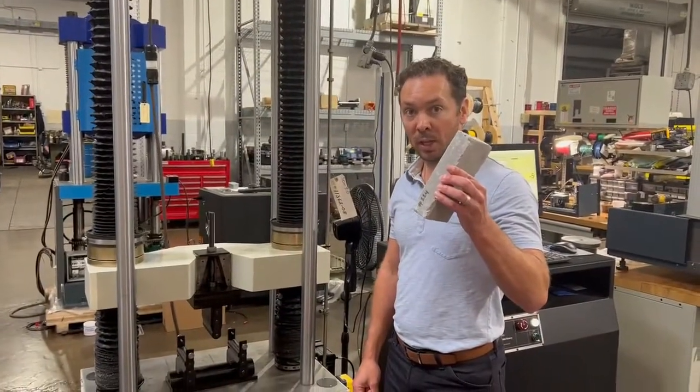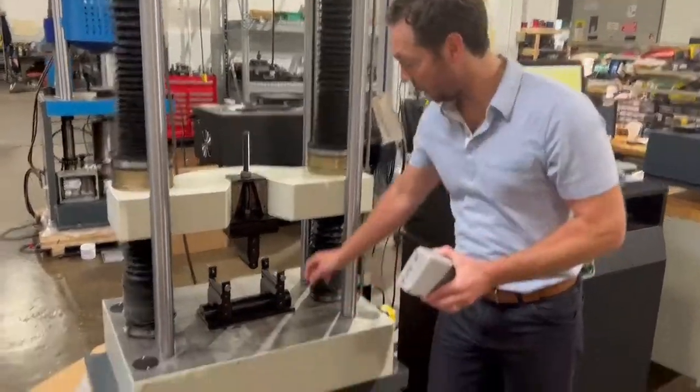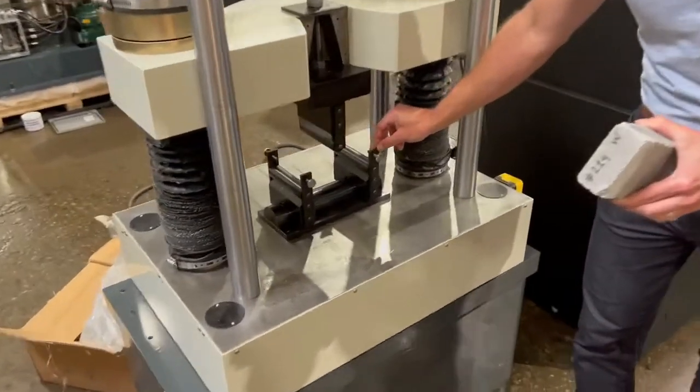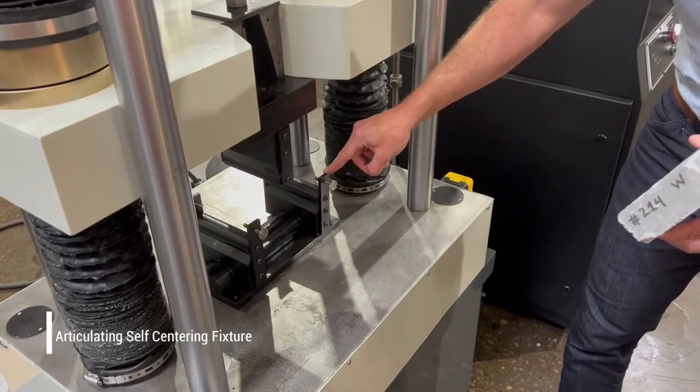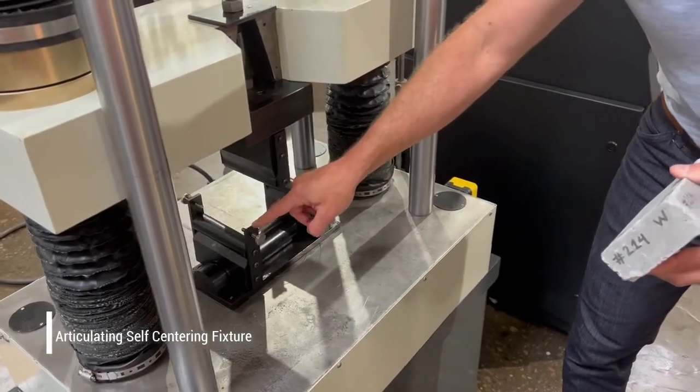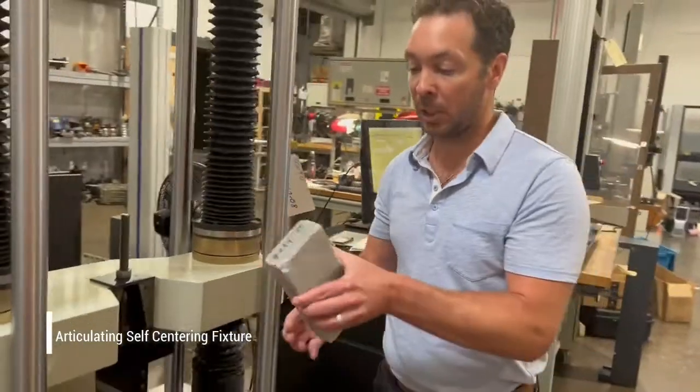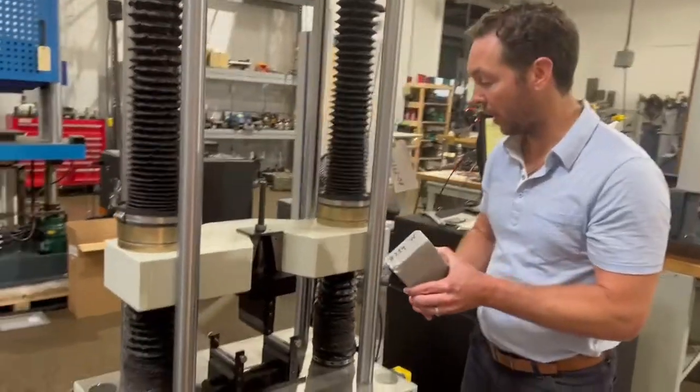Ready to run an MOR test. Here's our test sample. Here's our fixture. Everything's pre-aligned and centered. This is an articulating self-centering fixture where both sides have movement. So if you have any off-center-ness in your brick or your specimen, that is going to account for that.